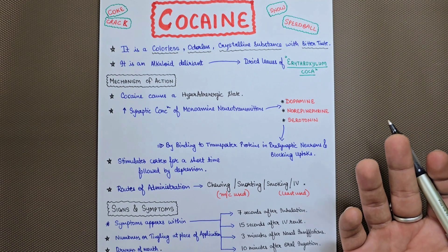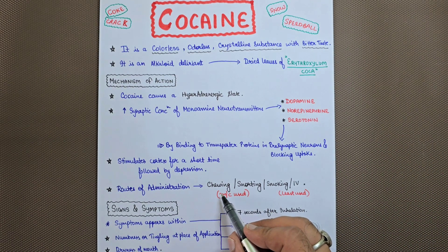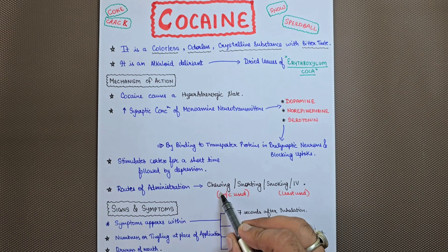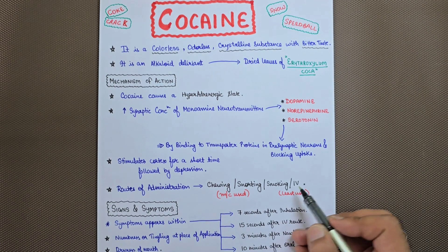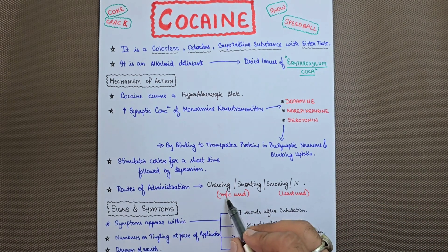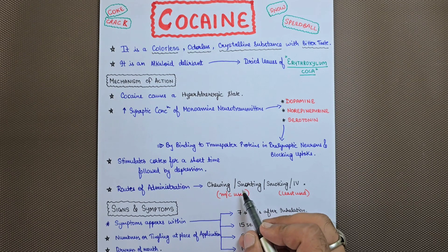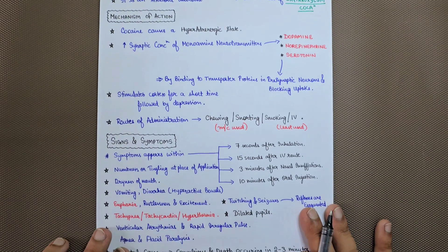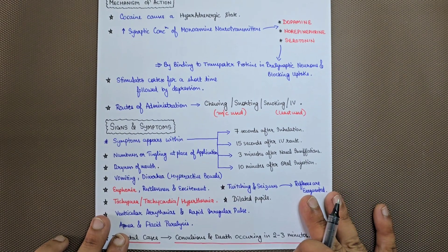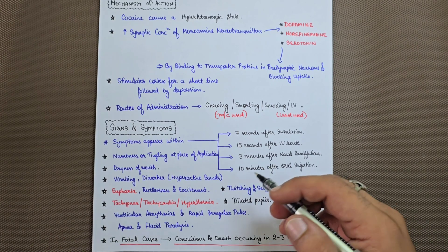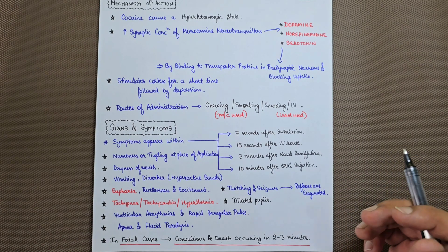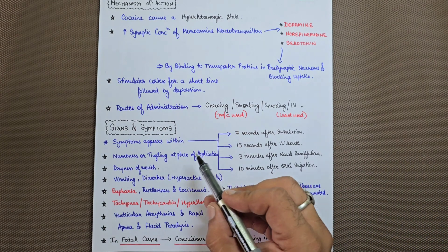The main routes of administration of cocaine are chewing, snorting, smoking, and IV misuse. Most commonly used are chewing and snorting. What are the signs and symptoms in case of cocaine poisoning when someone has abused cocaine in a higher amount?